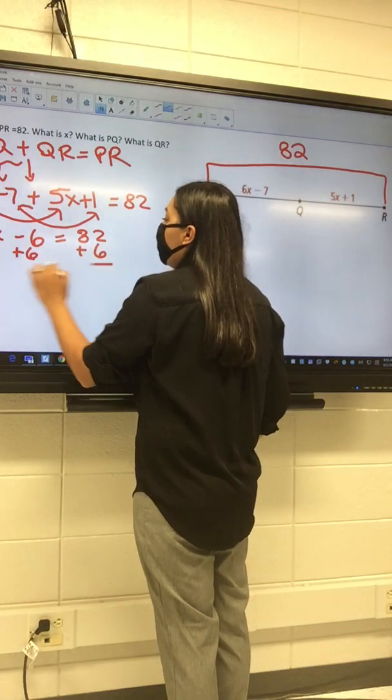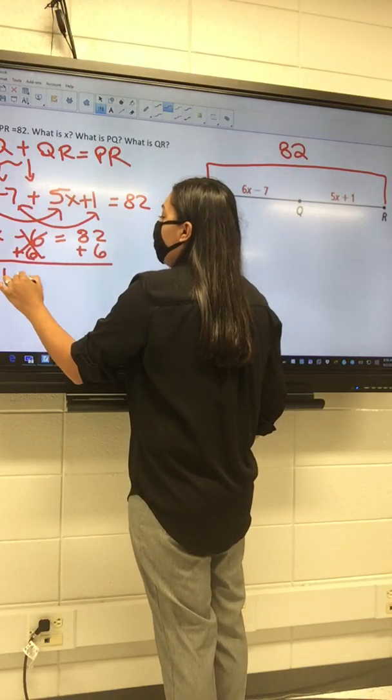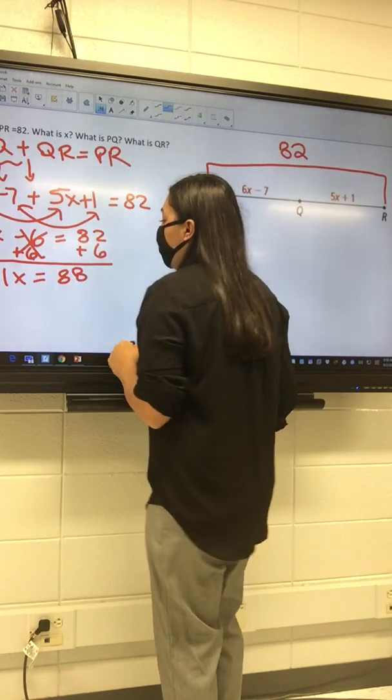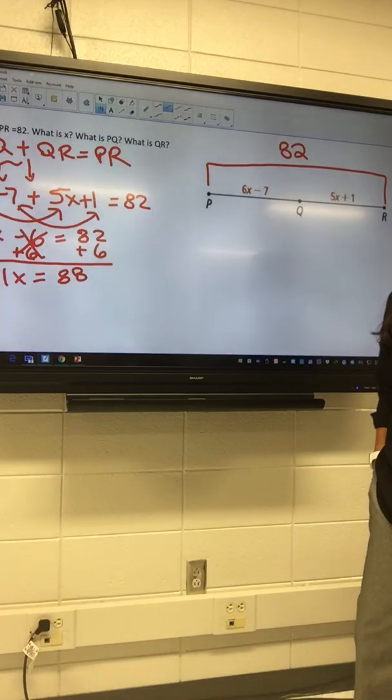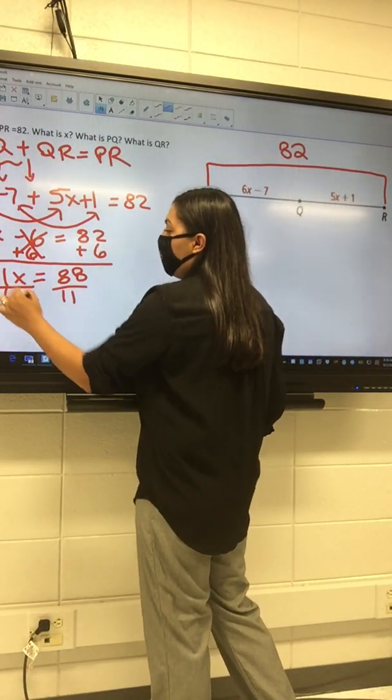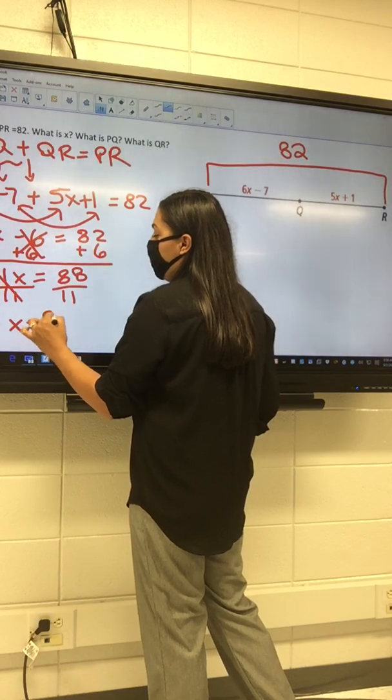We do it to one side, we got to do it to the other side. So now I got 11x equals 88. Then what do we do? Divide by 11 on both sides. So I got x equals 8.